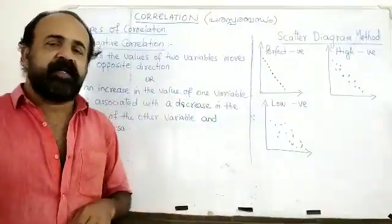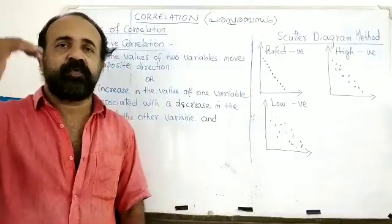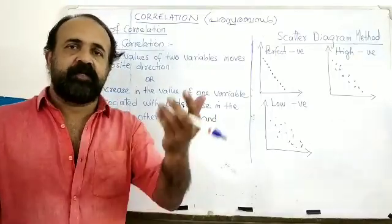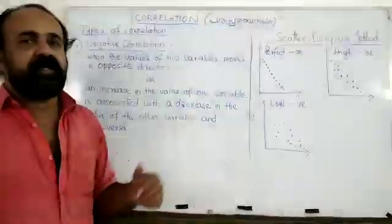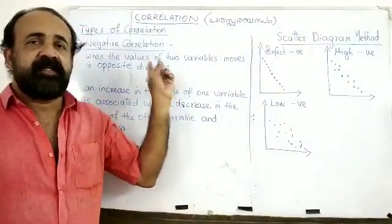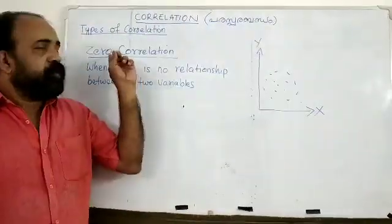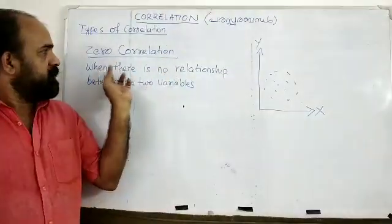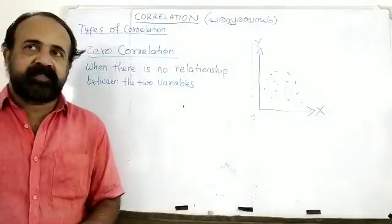When the values of two variables move in opposite directions, there is a negative correlation between the two variables. Zero correlation is when there is no relationship between the two variables.